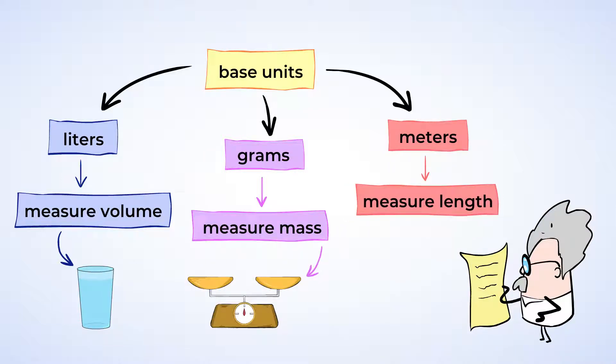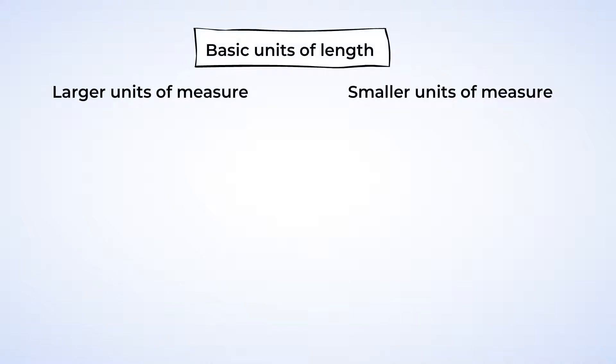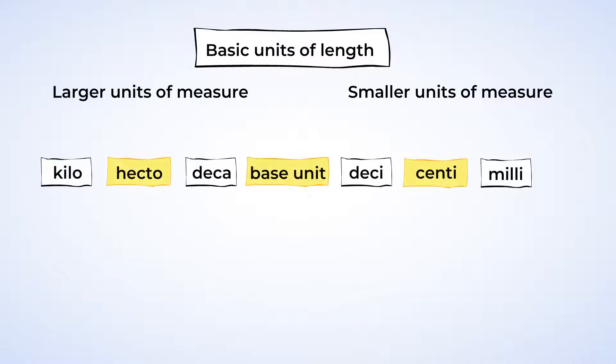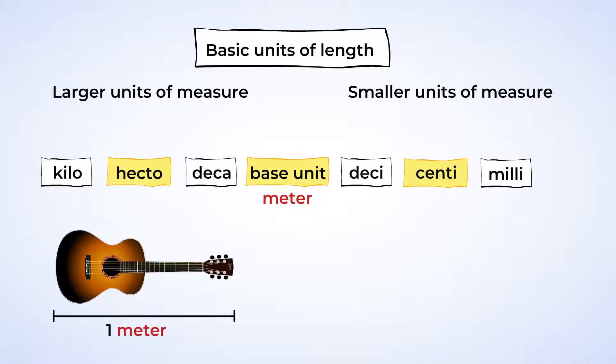But what if you need to measure something that's less than a liter, or something that weighs more than a thousand grams? Well, I guess you've never thought how many grams you weigh, have you? Well, yes, here come some other measurements. When you change the base units to larger or smaller units, you need to use some prefixes. Let's look at the lengths of different objects. The base unit for length is a meter. Did you know that this guitar is around a meter long? And so is this baseball bat.